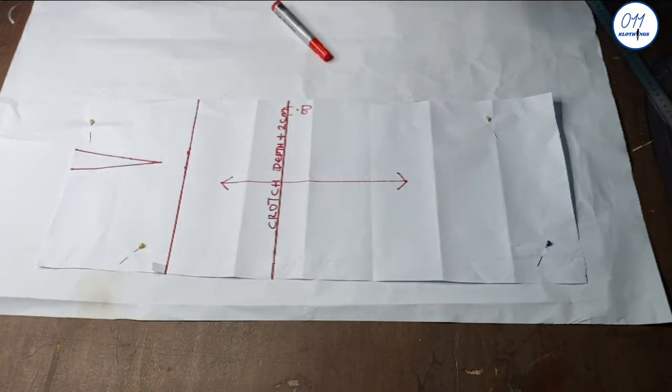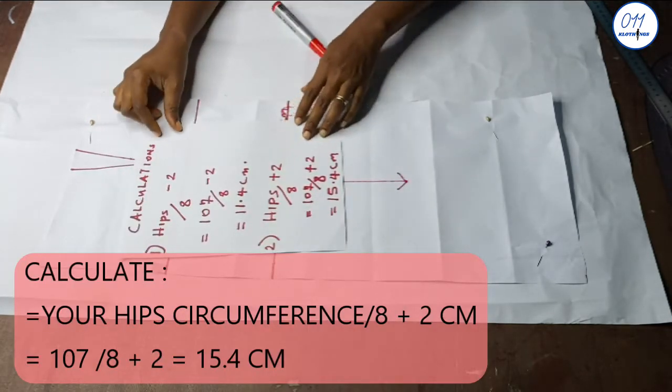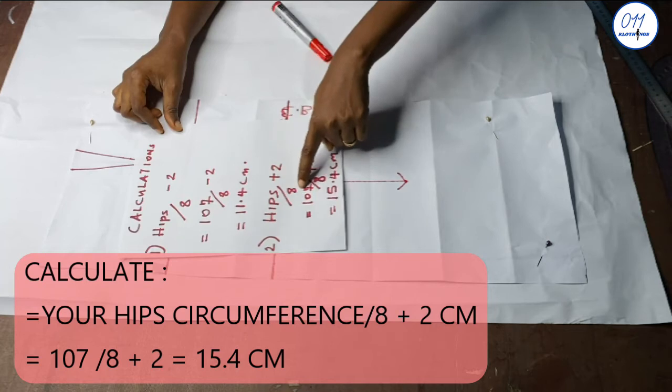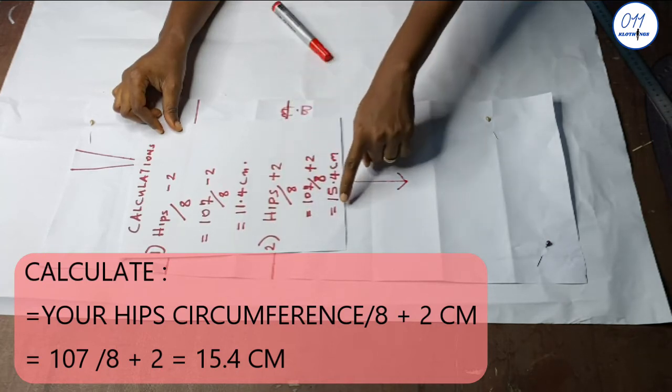I will now calculate my back crotch extension using the formula: hips measurement all over 8 plus 2 centimeters, which is 107 over 8 plus 2, and this gave me 15.4 centimeters.